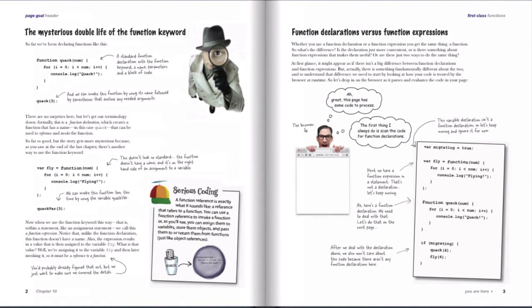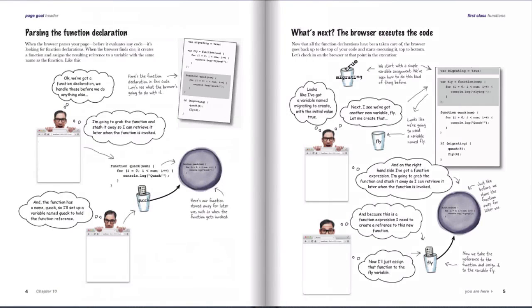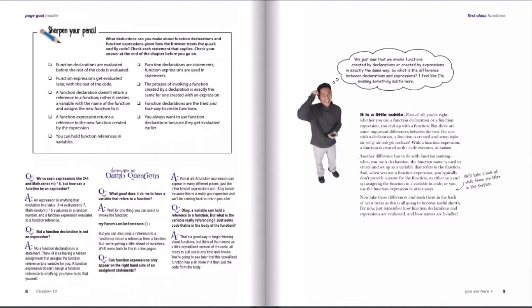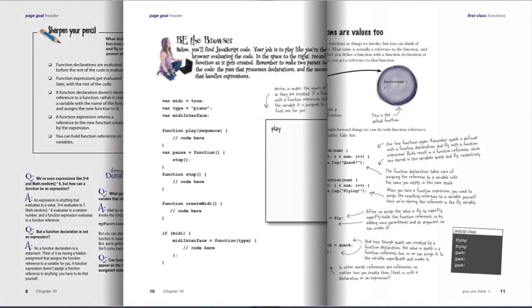But in this chapter, we start looking at functions from a slightly different perspective, and that is as values. To get you there, the first thing we do is take a closer look at how we create and invoke functions. There are actually a couple of different ways to create functions, and so we talk about that and step you through the details of how the browser handles functions and what it does with them when it sees them. So you'll learn about the mechanics of functions at a slightly deeper level.